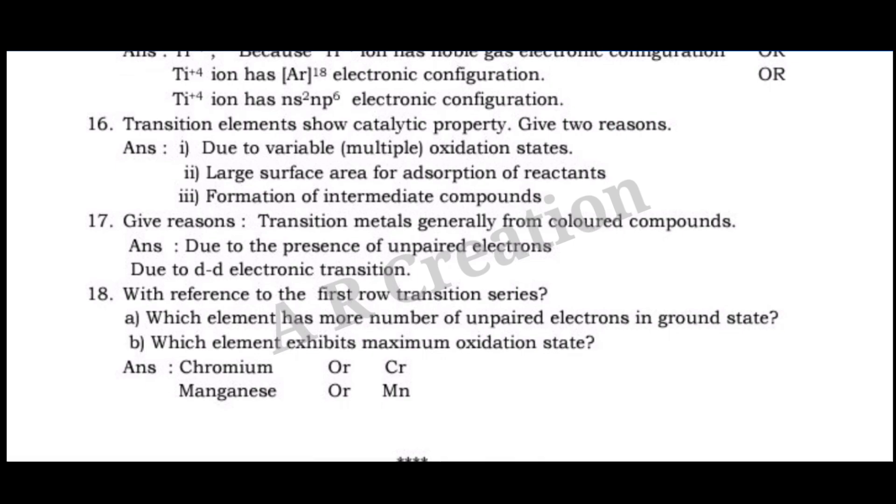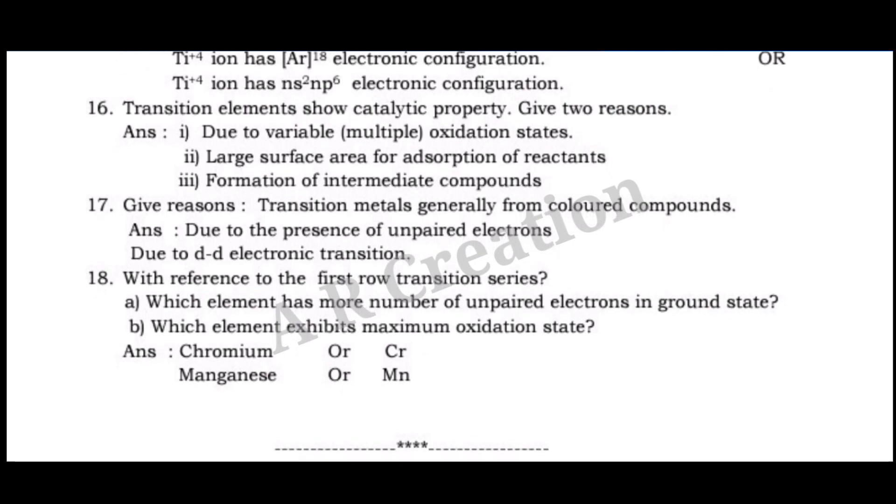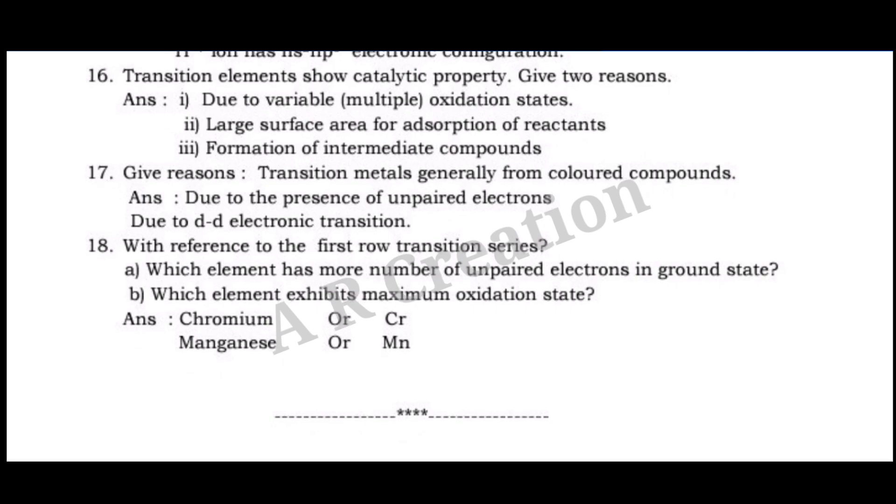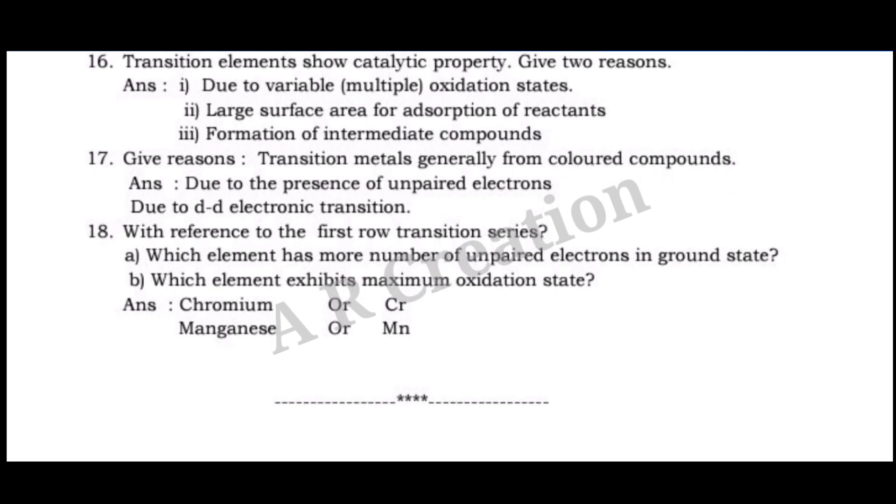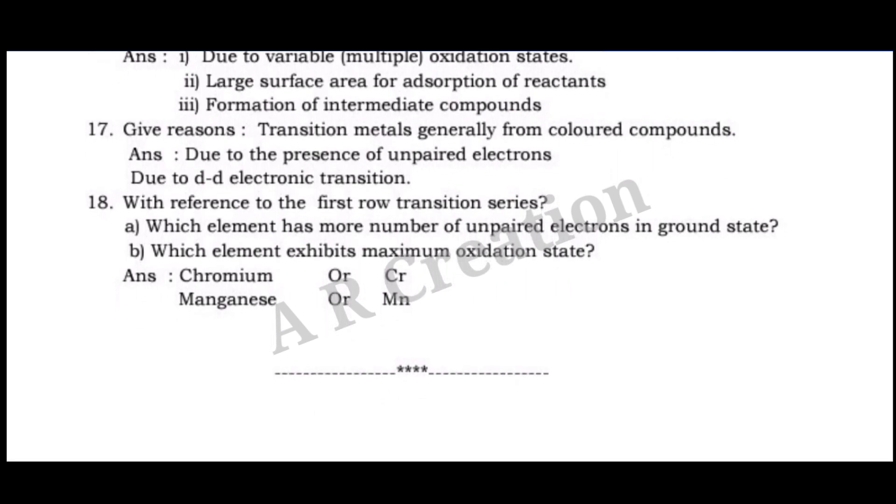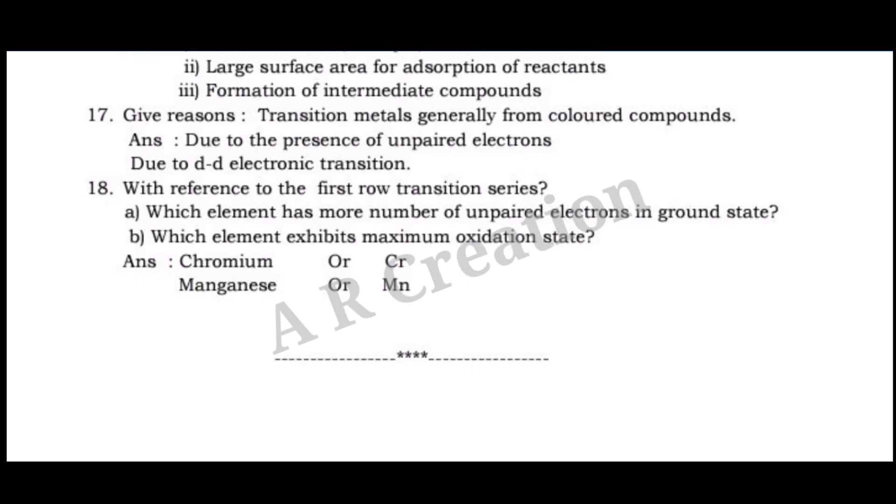Question 18. With reference to the first row transition series: a) Which element has more number of unpaired electrons in ground state? b) Which element exhibits maximum oxidation state? Answer: Chromium or Cr or Mn manganese.